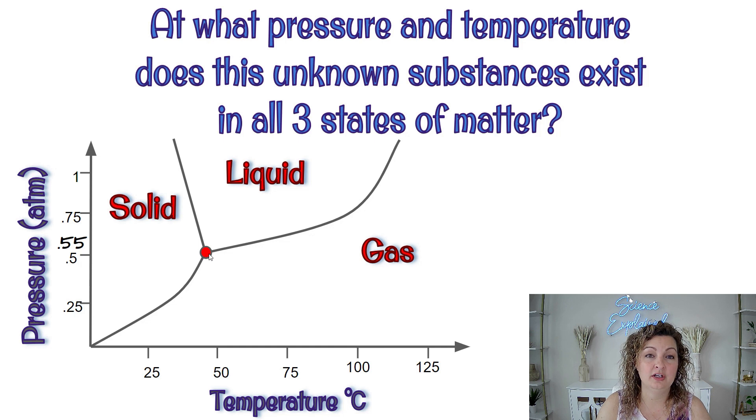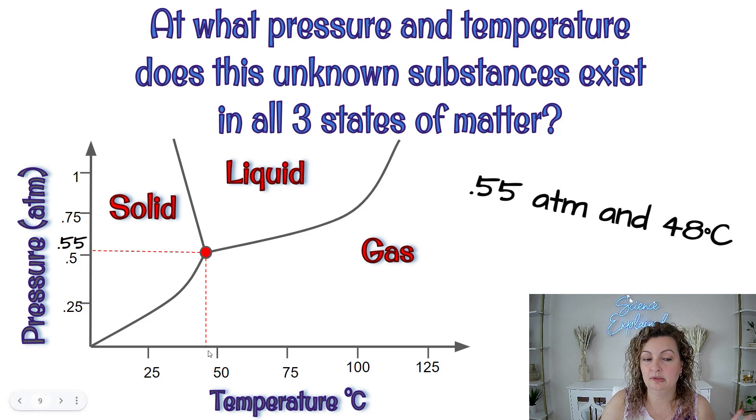Now it's asking us for the temperature and pressure. So if we go ahead and go over, you can see we're roughly about 0.55 atmospheres. And then if we go down, that looks about 48 degrees Celsius. That's just a rough estimate, right? Because we don't have all the little lines, but that is a good rough estimate. So that is going to be where our triple point is for this graph.